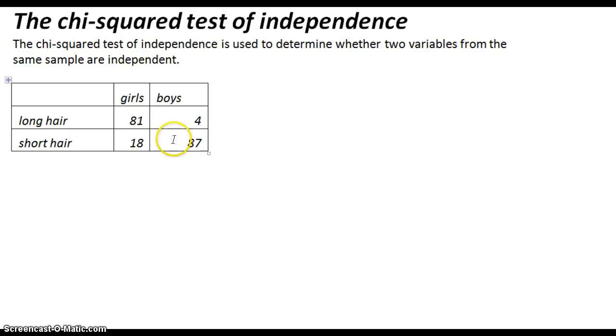Obviously, it is dependent. It is not independent. And so chi-squared is a way to mathematically show that these two variables, in this case hair length and the gender of the student, are not independent. They are related.